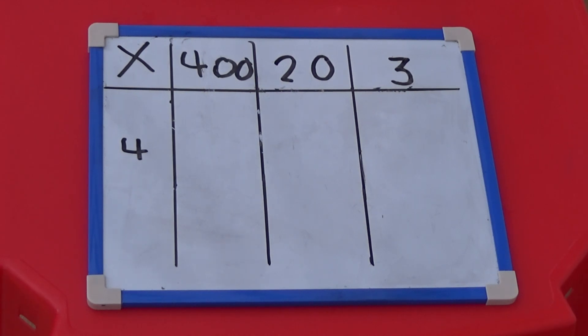This time I'm going to draw out the 400s, the two tens and the three ones four times.